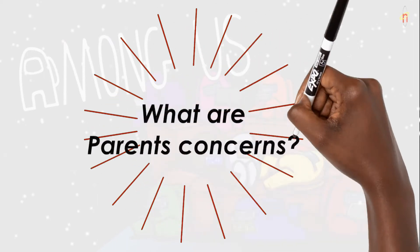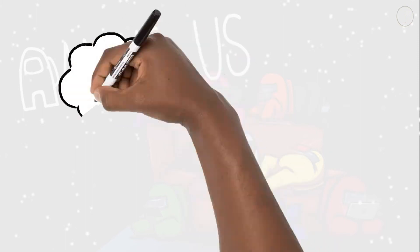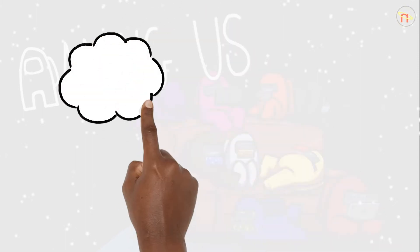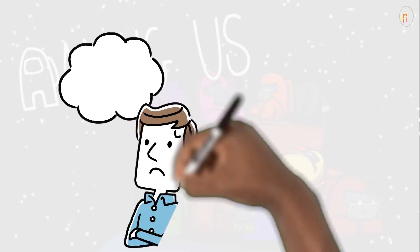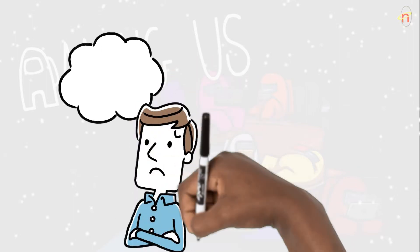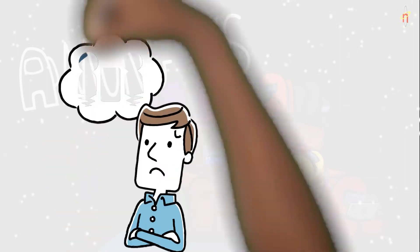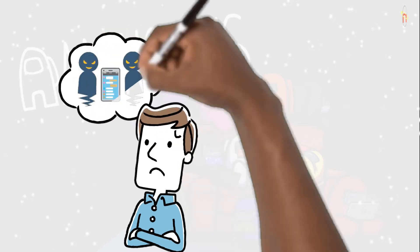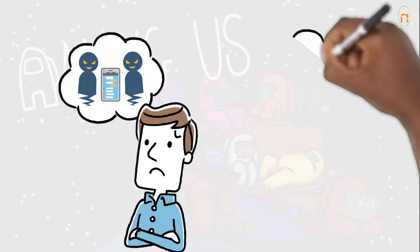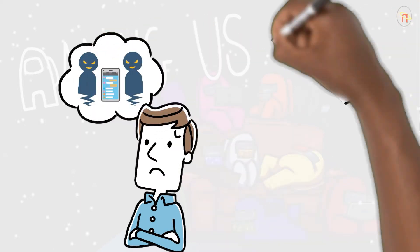What are parents' concerns? One of the main concerns that parents have with Among Us is the open chat functionality. What this means is when your child is playing in the public forum, they can be speaking to anybody and you just don't know who they are. This could potentially put your child at risk of online predators.